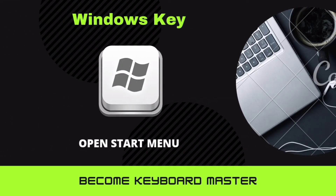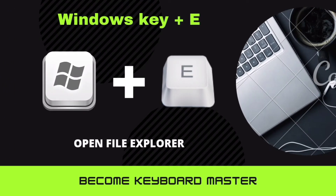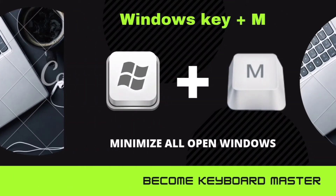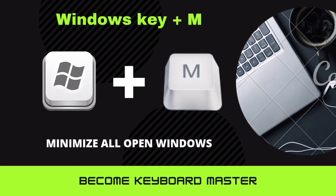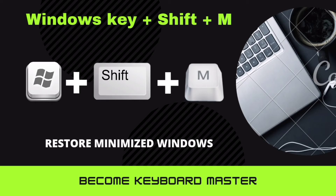Let's begin with the Windows key — this shortcut key is used to open the Start Menu. Windows key plus E is used to open File Explorer. Windows key plus R is used to open the Run window. Windows key plus M is used to minimize all open windows. Windows key plus Shift plus M is used to restore minimized windows.